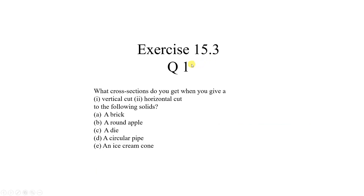In exercise 15.3 there is only one question, question number one. It says: what cross sections do you get when you give a vertical cut and a horizontal cut to the following solids — A brick, B round apple, C die, D a circular pipe, and E an ice cream cone. Here, different solids are given and we have to cut these solids vertically and horizontally. When we cut these solids, the inside part is called a cross section.